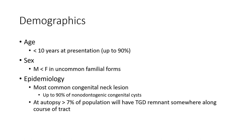Predominant in females, with an uncommon familial form. Epidemiology: thyroglossal duct cyst is the most common congenital neck lesion, accounting for up to 90% of non-odontogenic congenital cysts. More than 7% of the population will have thyroglossal duct remnant tissue along the course of the tract.